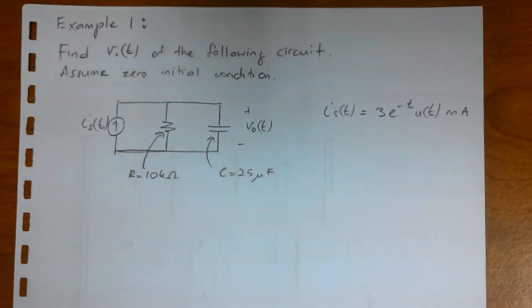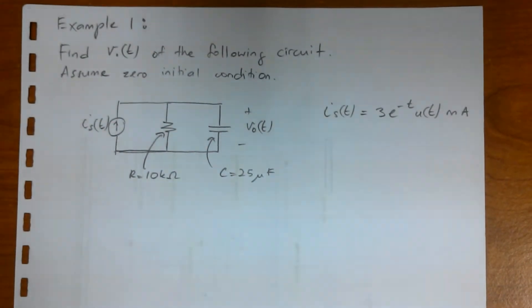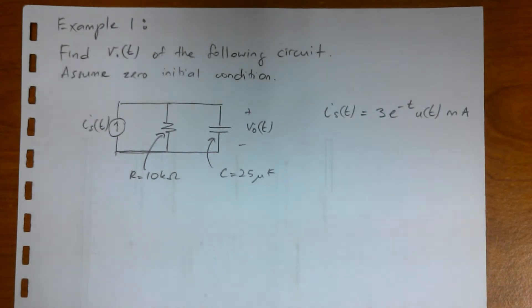Now let's look at one example of how we can use Laplace transformation to solve for a simple circuit. The circuit is in T domain. To solve this, we will use Laplace transformation to transform the circuit into S domain and find the Vout in S domain, and then inverse Laplace transform Vout S domain into Vout T domain. That's how we're going to solve this circuit.